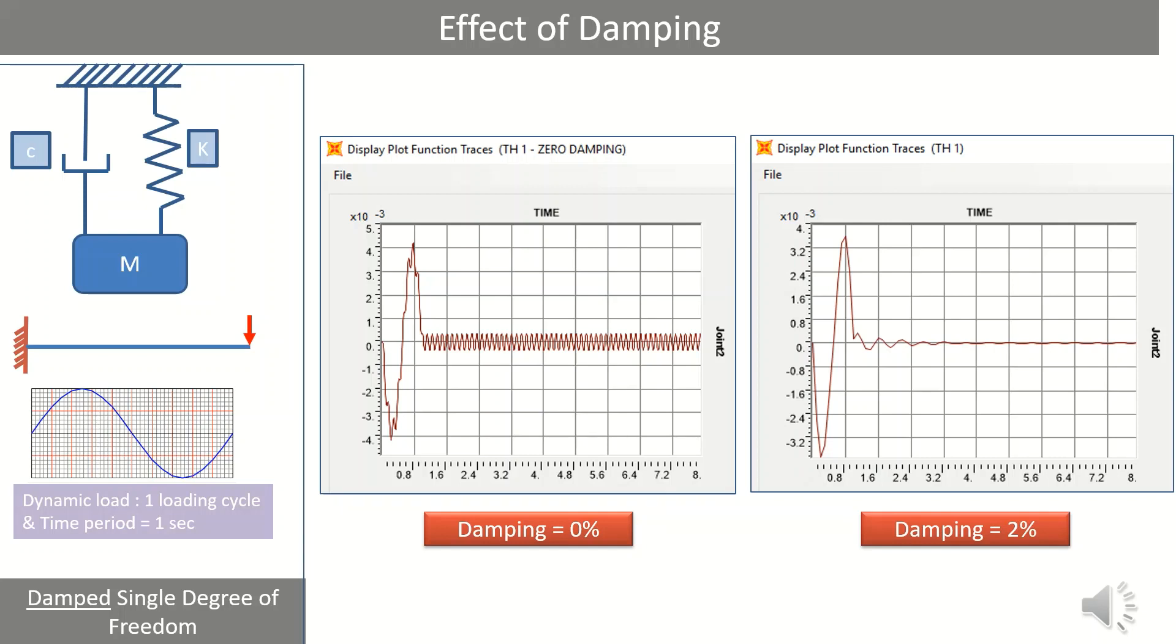In case of structure without damping, we can observe that the structure continues to oscillate even after removal of the load after one second. However, in case of damping, we can observe that amplitudes are gradually reducing after removal of the load and eventually it diminishes to zero.